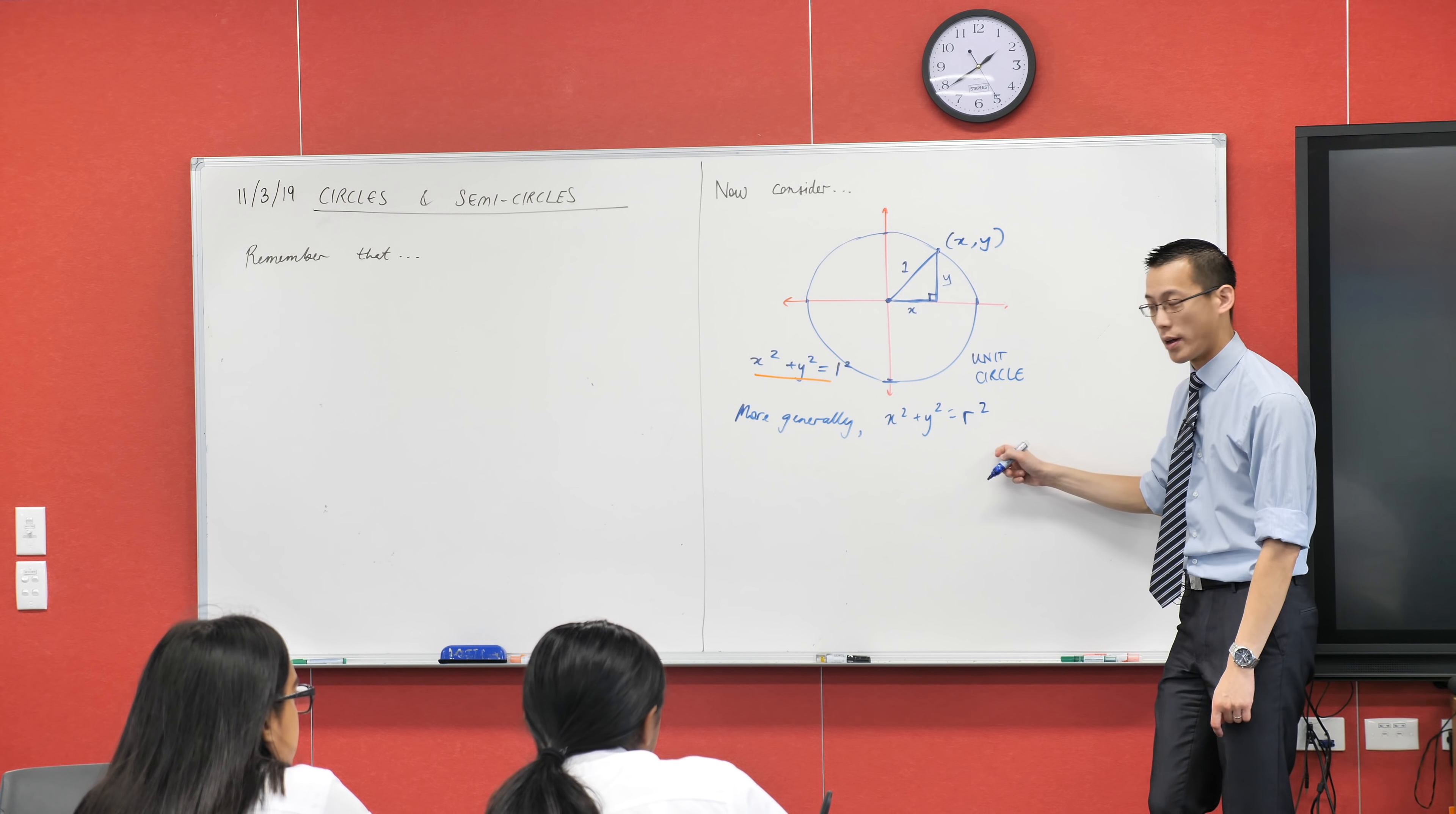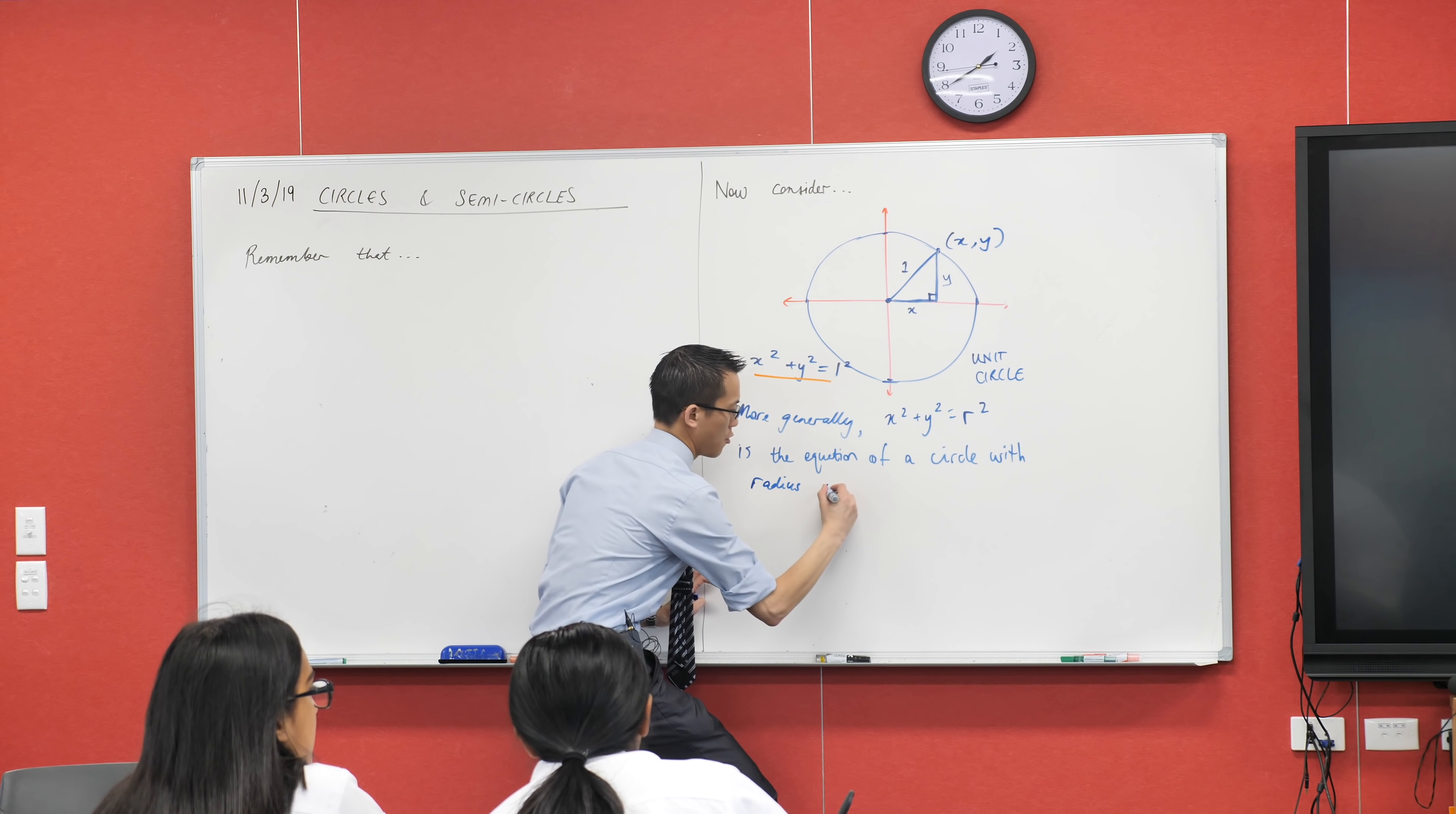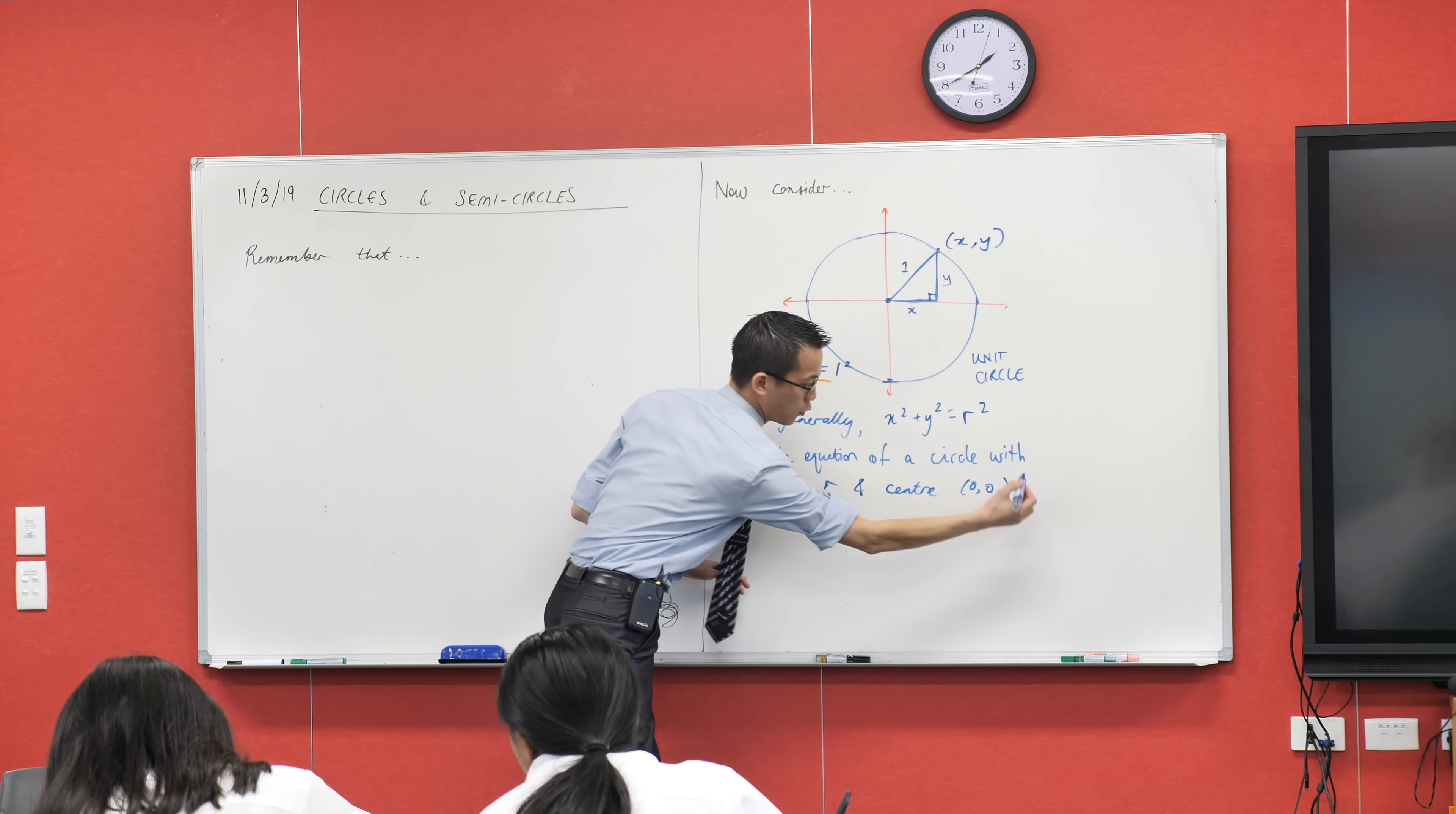x squared plus y squared equals R squared is the equation of a circle with, now every circle has two pieces of information that define it. We already just said one, right? There's the radius. So it's the equation of a circle with radius R. But the other piece of information we need is, where is this circle? Right? Now do you remember when we had a look at the parabolas? And then we had a look at the hyperbolas, right? So where is the center of this? It's at the origin, right? With radius R and center 0, 0. Full stop.